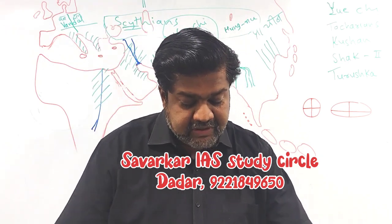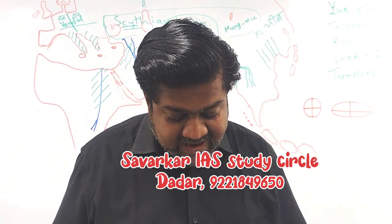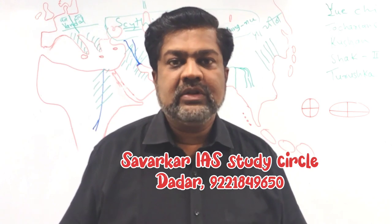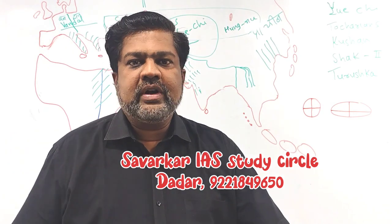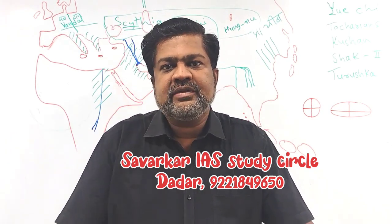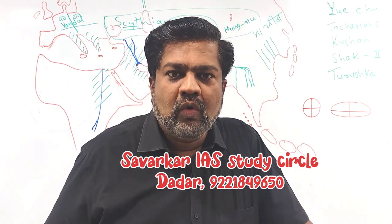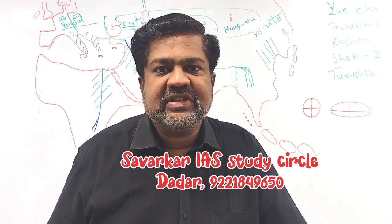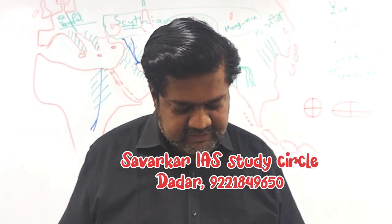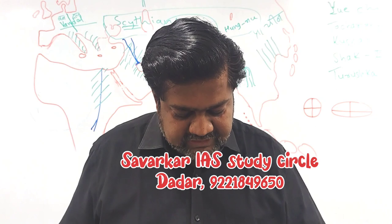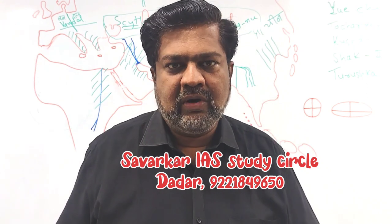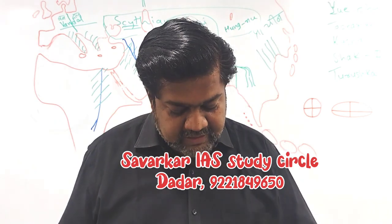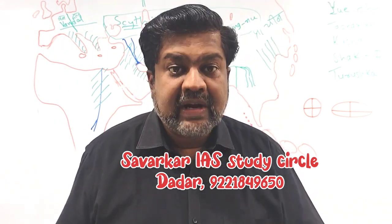Question 11 — Statement 1: Members of Rajya Sabha are directly elected by citizens of India. False — they are elected indirectly; common citizens do not directly vote for Rajya Sabha members. Statement 2: Vice President of India is the chairperson of Rajya Sabha. True — this is a default constitutional provision. First is false and second is true — answer is B.